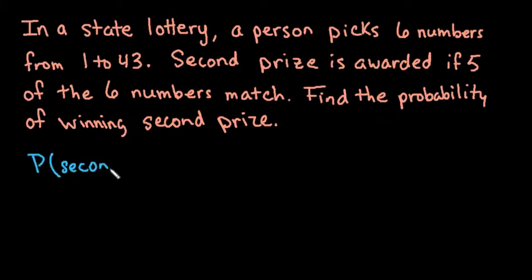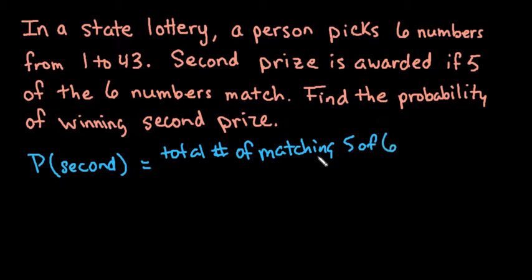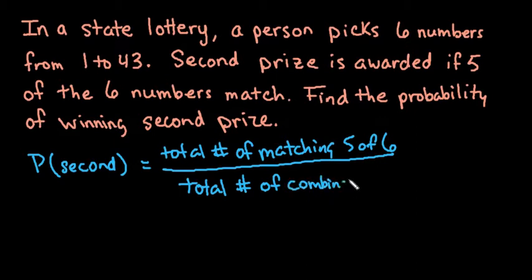With this, remember that the probability is the total number of matching five of six over the total number of combinations of 43 taken six at a time.